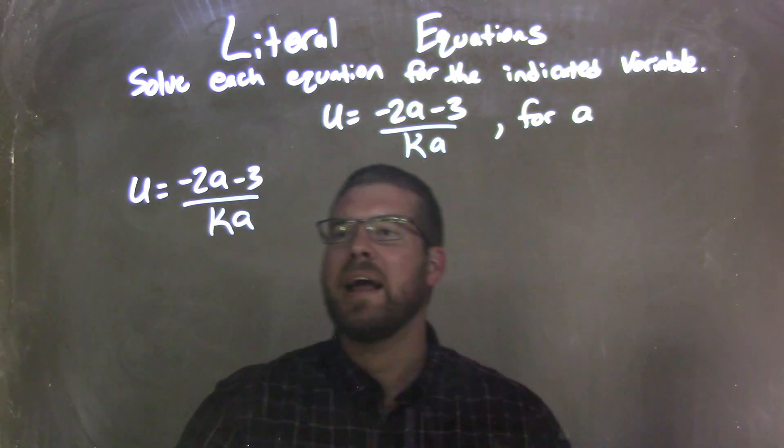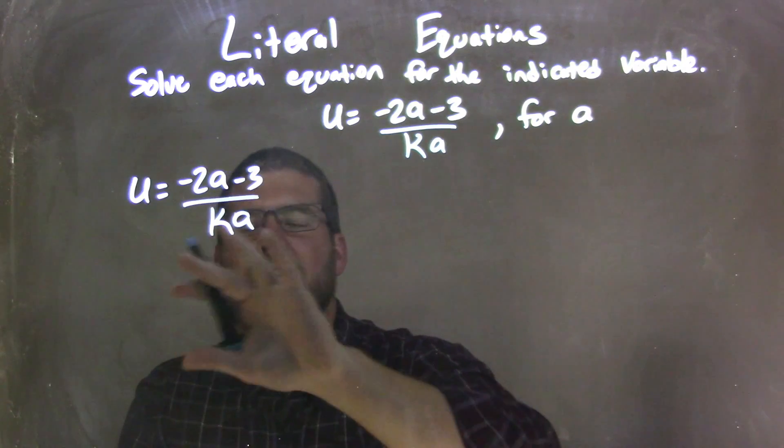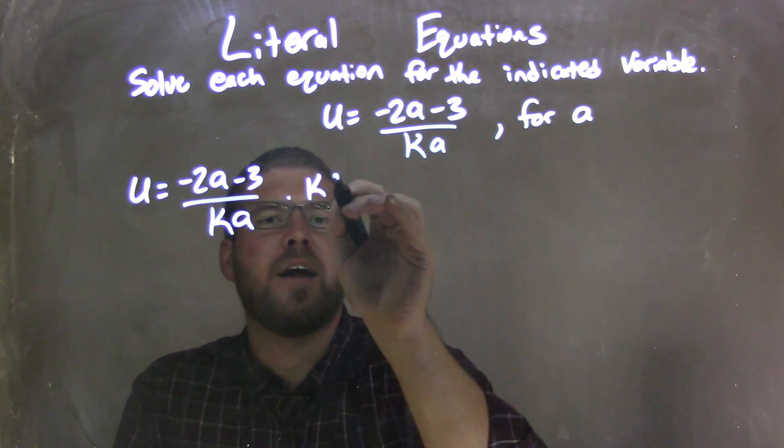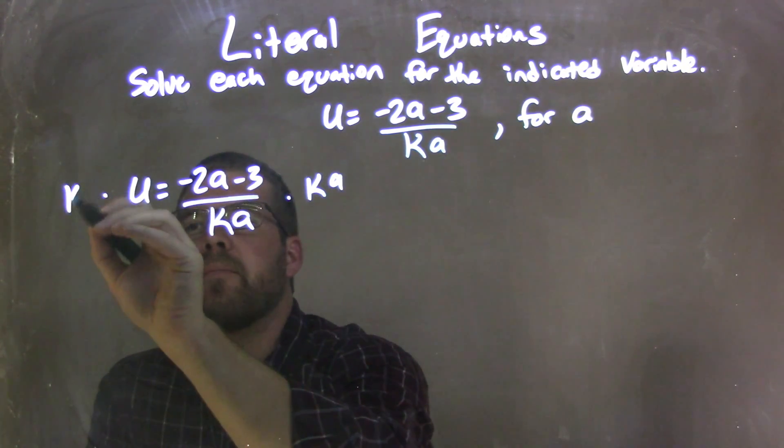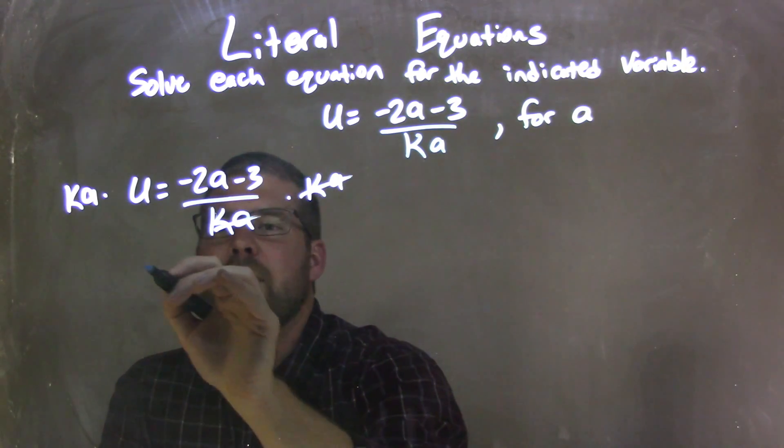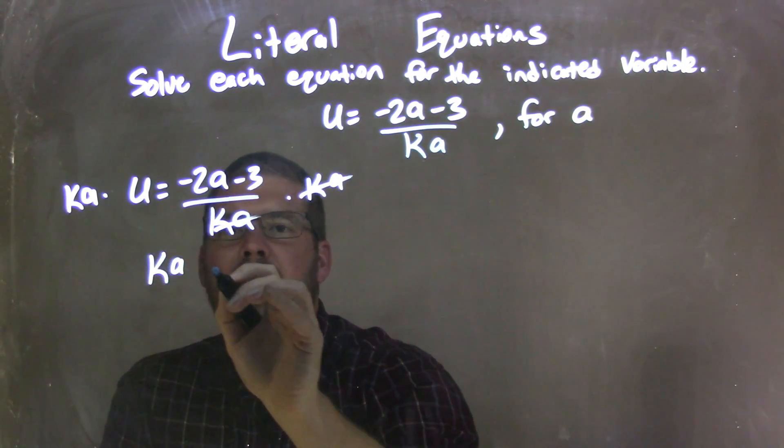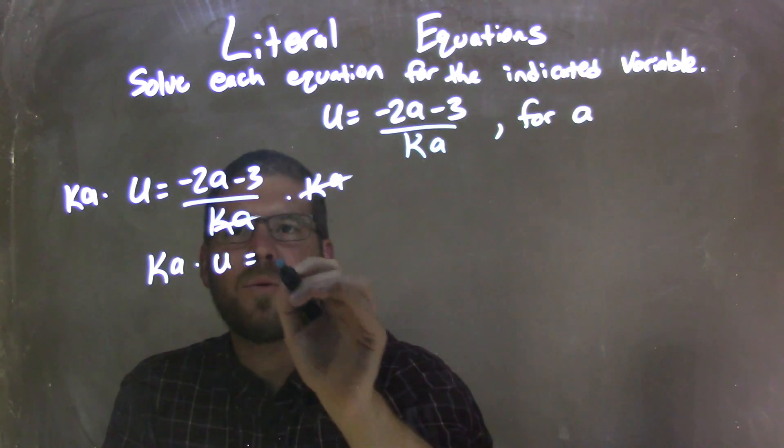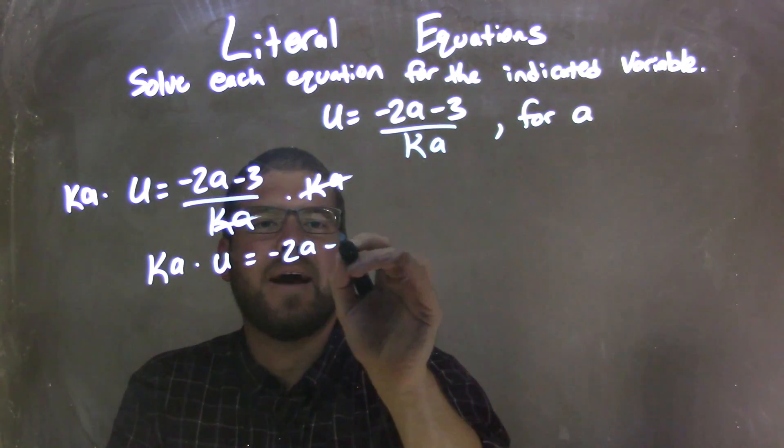I want to get all my a's together, but first I'm going to get it out of the denominator. So I'm going to multiply both sides by ka. What that does is help me eliminate the ka's here on the right, and I'm left with ka times u equals negative 2a minus 3.